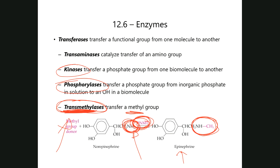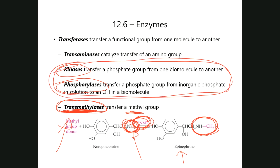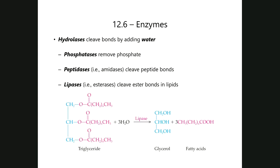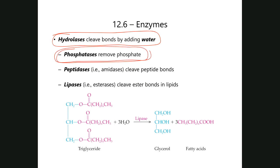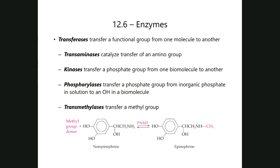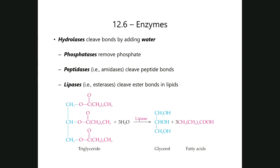Hydrolases involve cleavage by the action of water. A phosphatase — not to be confused with a phosphorylase or kinase — removes phosphate from a structure. It takes the phosphate off and that's it, no more phosphate. A peptidase is technically an amidase because it breaks amide bonds, specifically peptide bonds joining amino acids in a protein. When you ingest protein from a cheeseburger, steak, fish, or soybeans, the peptidases in your intestines chop up all the proteins, breaking peptide bonds so you can absorb the amino acids.